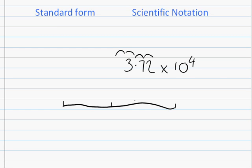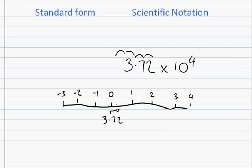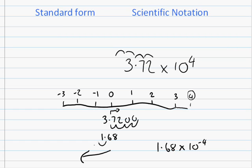The way I remember which way to move the decimal place is by the simple use of a number line. Put zero in the middle, with 1, 2, 3 going positive to the right and minus 1, minus 2, minus 3 going negative to the left. It works the same way for the decimal place: if it's 10 to the 4, the decimal in 3.72 moves to the right 4 places, giving 37,200. If it's 1.68 times 10 to the minus 4, you move the decimal to the left 4 times.